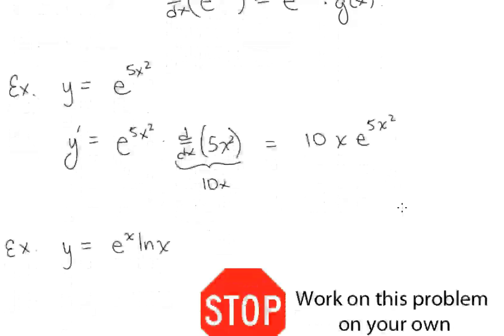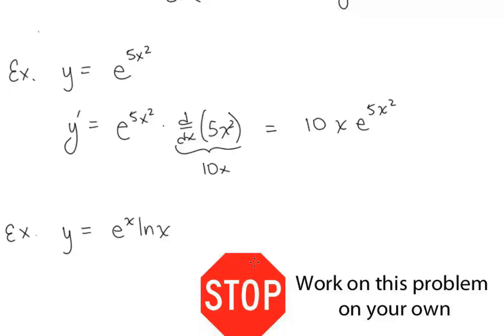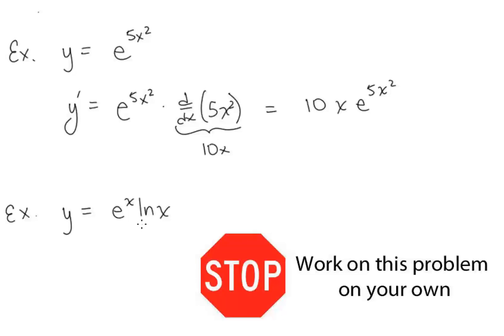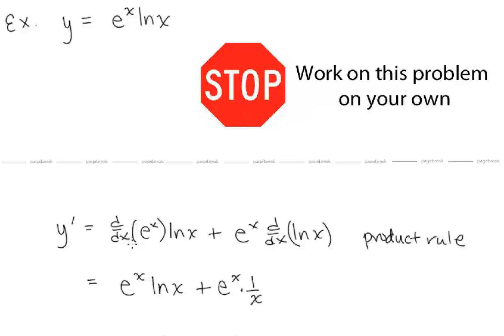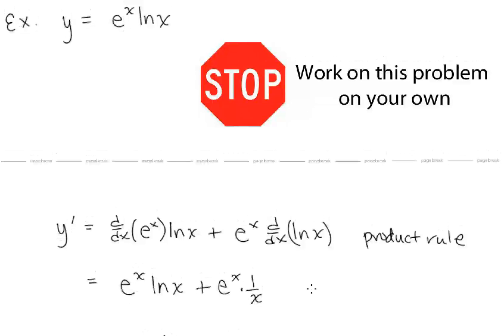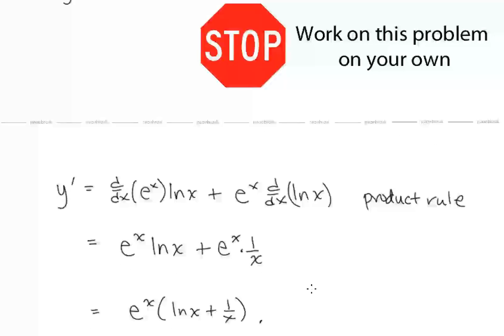Let's take a look at y equals e to the x times ln x. We need to use the product rule here. Using the product rule: the derivative of e to the x times ln x plus e to the x times the derivative of ln x. That gives us e to the x ln x plus e to the x times 1 over x. If you like, you can factor out e to the x to simplify.